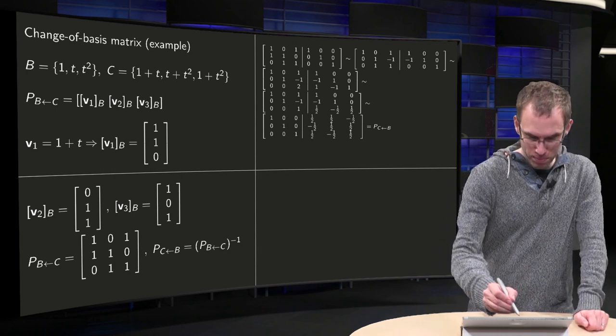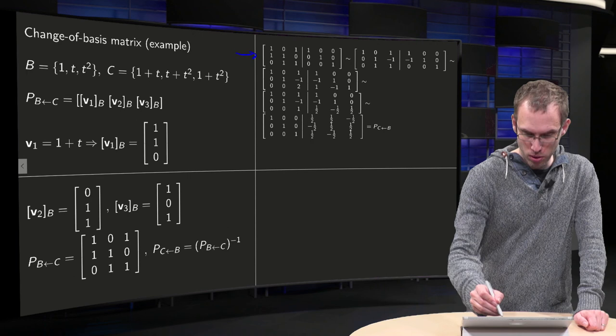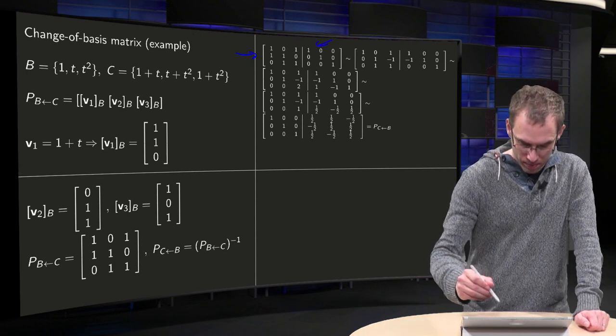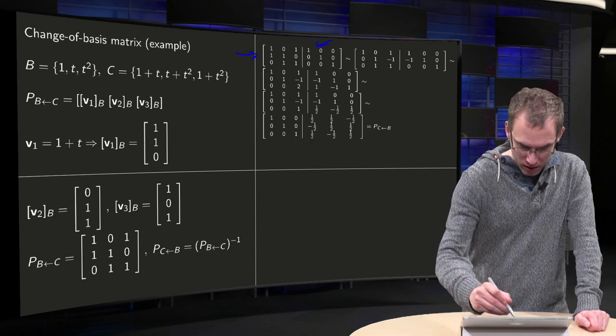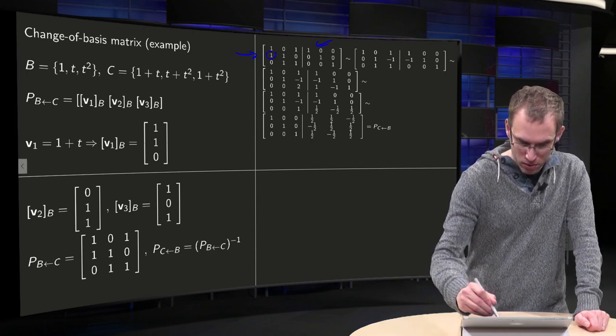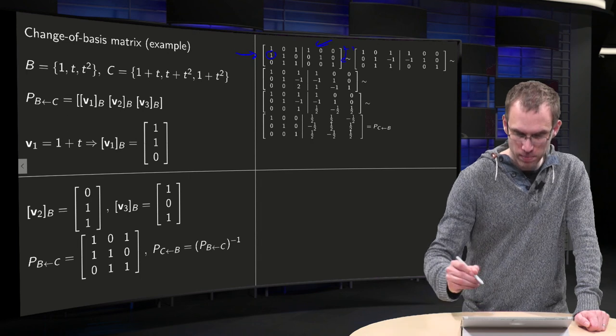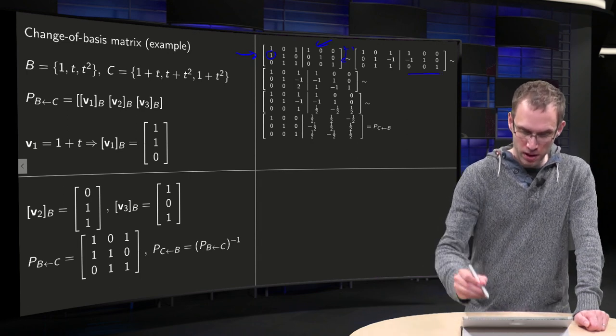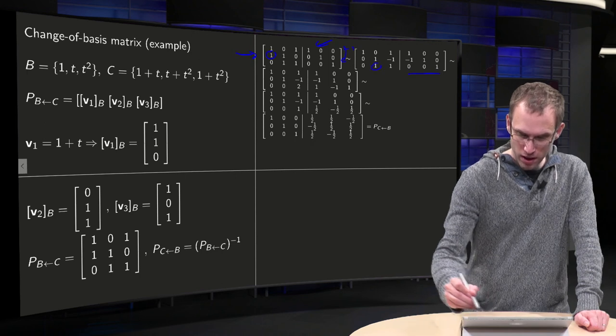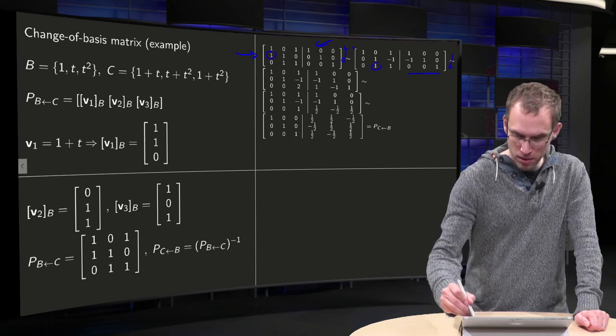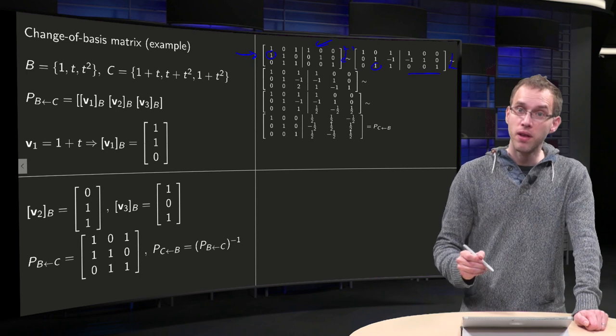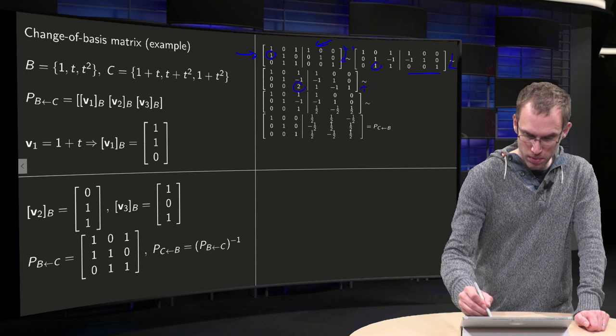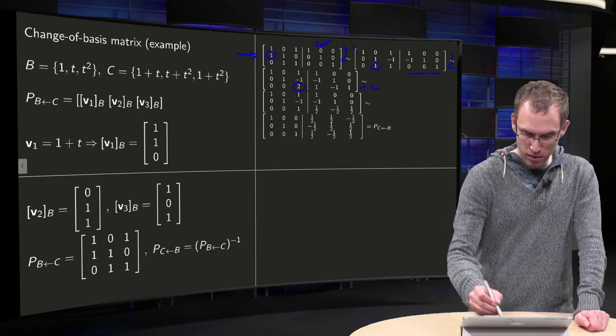Here we have P from C to B, augmented with the identity matrix, and we do row reduction. First we get rid of this one here, using a minus 1, and we are over here. Then we get rid of the one here by using another minus 1. Then we want to get rid of the 2, so we divide by 2. Then we are over here.